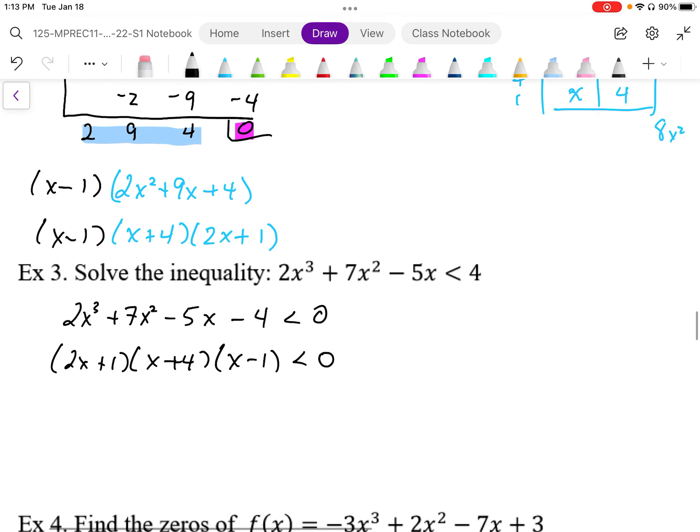We now have the factored form of this polynomial. So what that means is we know what the zeros are. We know that we have a zero at negative 1 half, we have a zero at positive 1 and negative 4. This is a polynomial that is going in this direction. It's a positive leading coefficient, so it goes in the positive slope direction.